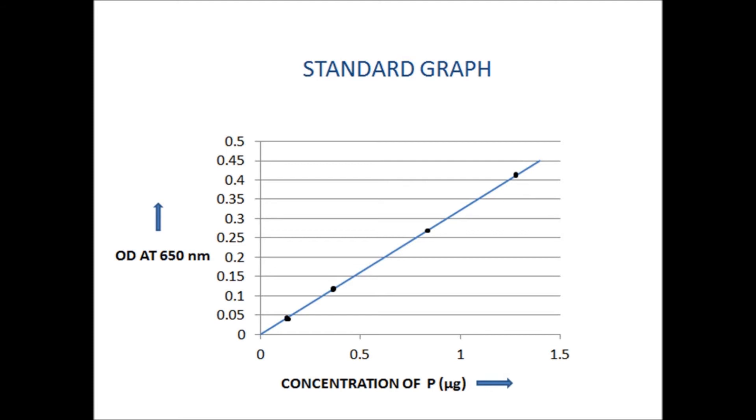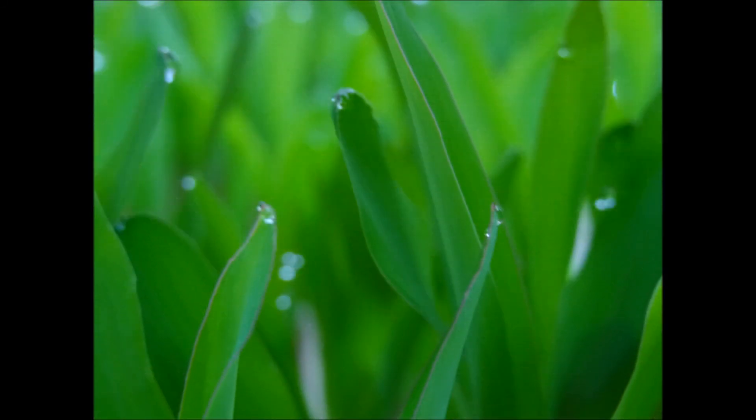The sample which has an OD of 0.152 on the y-axis corresponds to 0.5 microgram concentration of phosphorus on the x-axis.